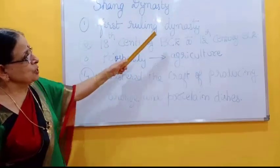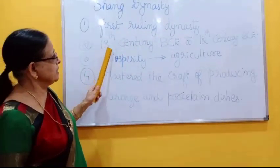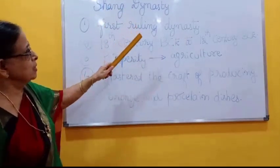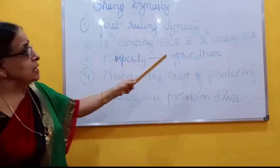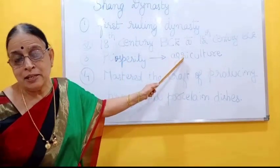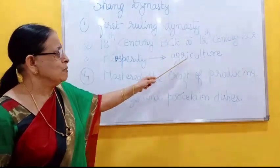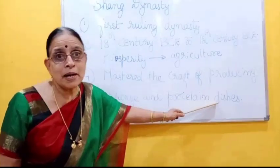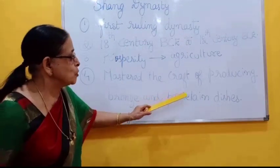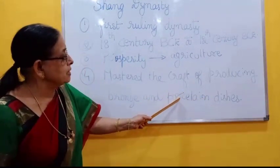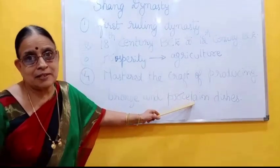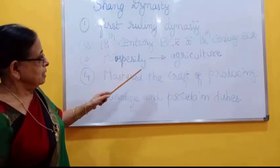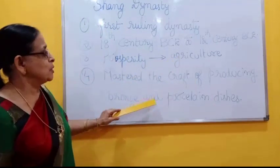Shang dynasty was the first ruling dynasty of ancient China. It ruled from the 18th century BCE to the 12th century BCE — that is almost 600 years, or 6 centuries. The prosperity of ancient China depended on agriculture; they gave great importance to agriculture. Along with agriculture, they mastered the craft of producing bronze and porcelain dishes. Bronze is an alloy of copper and tin. In this way, they progressed in agriculture and in the craft of producing bronze and porcelain dishes.